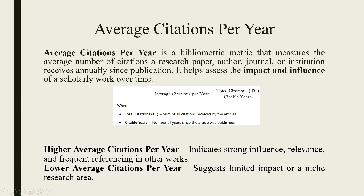Average citations per year is a bibliometric metric that measures the average number of citations a research paper, author, journal, or institution receives annually since publication. It helps assess the impact and influence of scholarly work over time. The formula is: total citations divided by citable years, where citable years is the number of years since the article was published. Higher average citations per year indicates strong influence and frequent referencing; lower values suggest limited impact or a niche research area.